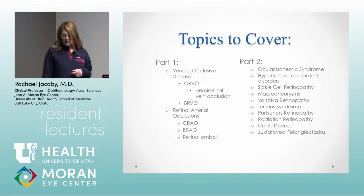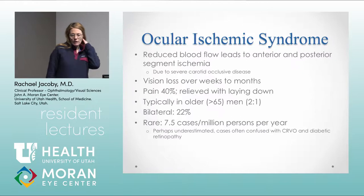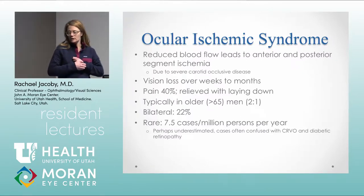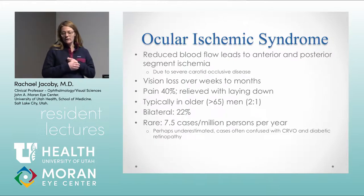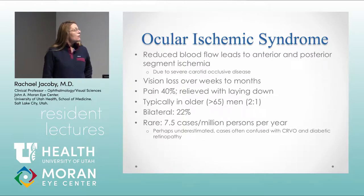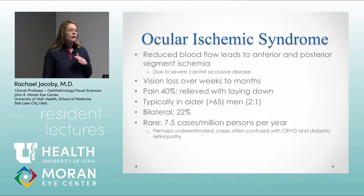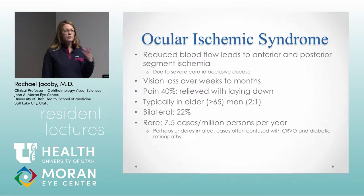We'll start with ocular ischemic syndrome. Severe carotid occlusions can lead to reduction in blood flow, and this reduction from the carotid system leads to both anterior and posterior segment ischemia. The most common complaint is vision loss, which is gradually progressive over weeks to even months. A fair number of patients will come in complaining of pain — this is typically an ischemic type pain, so the pain gets better when they lay down.